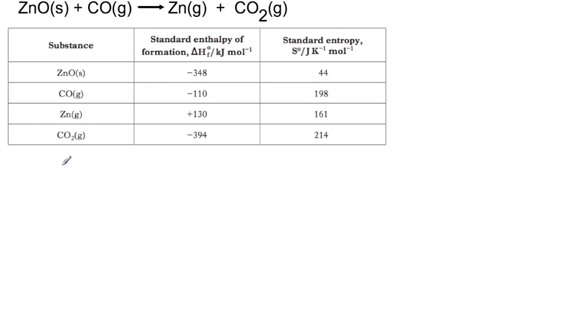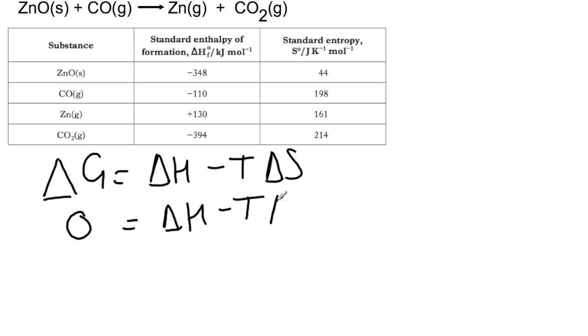In the next calculation we're going to work out at what temperature would this reaction become feasible. We need to use our other equation, delta G equals delta H minus T delta S. Reactions become feasible at the point at which delta G is equal to zero, so we can rearrange the equation for T such that T equals delta H divided by delta S.